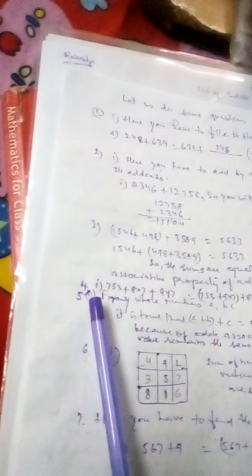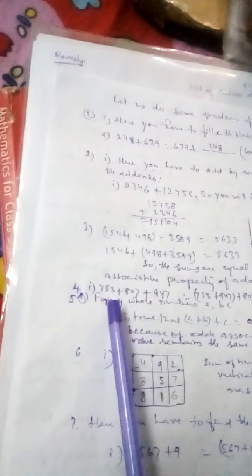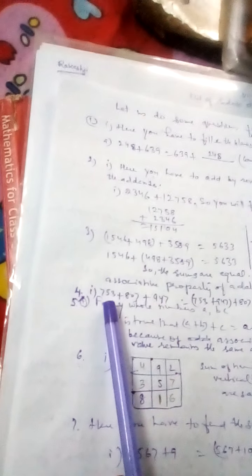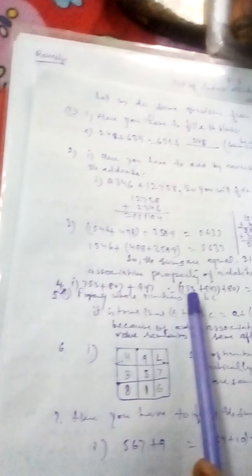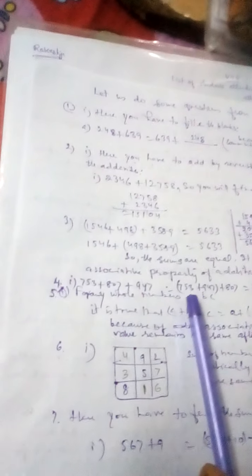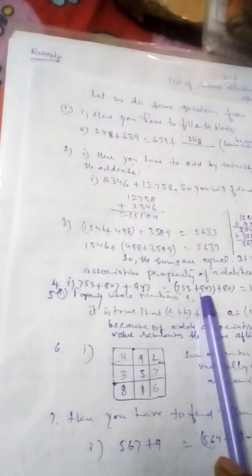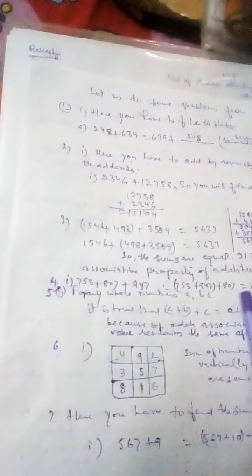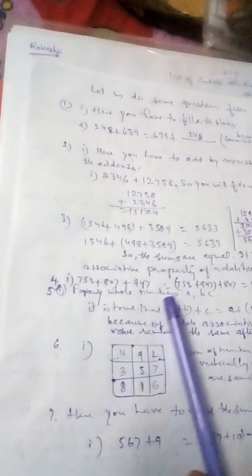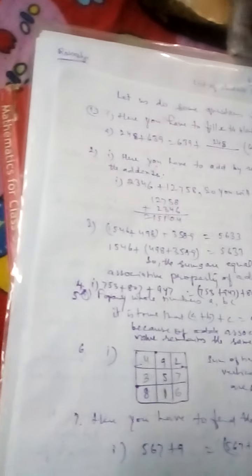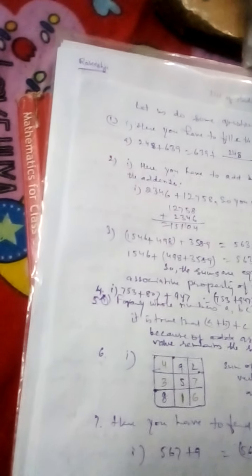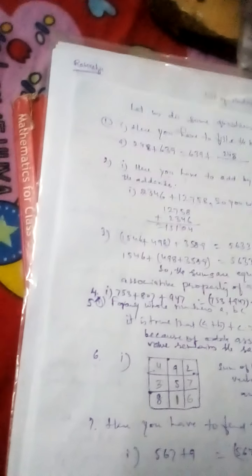Next, go for question number 4. You have to add 753 plus 807 plus 947. The value will be equal to 753 plus 947 plus 807. That is, in each case you will find the value is 2507, and this is because of associative law of addition.